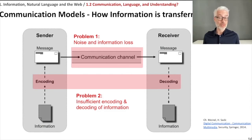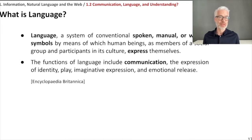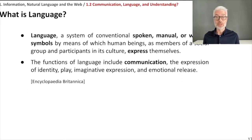Let's have a look at information and how it is transferred. One way to transfer information — this kind of encoding into a message — happens by using language. So we have to see what language is. Again we start with a dictionary definition, this time from the Britannica. They say language is a system of conventional spoken, manual or written symbols by means of which human beings as members of a social group and participants in its culture express themselves. The functions of language include communication, which is the most important one for us, as well as the expression of identity, play, imaginative expression or emotional release. But we will focus on communication with the help of language.